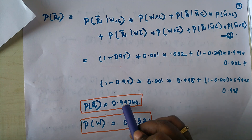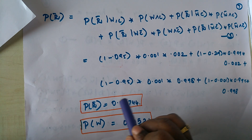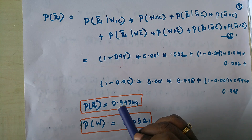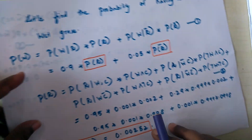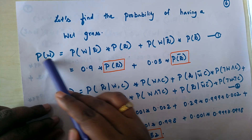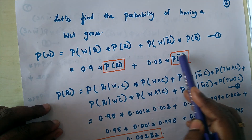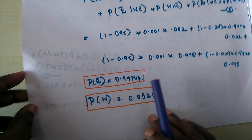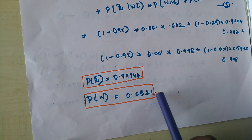The probability of not raining is 0.99744. Substituting the probability of rain and probability of not raining into the equation, we predict the probability of wet grass as 0.0521. This is how the uncertainties in the random variables can be understood using the Bayesian belief network.